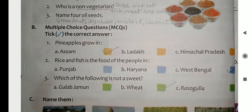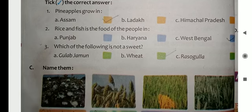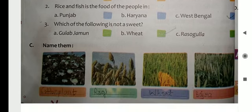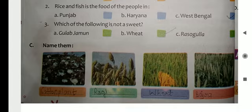Question three: Which of the following is not a sweet? Options: Gulab Jamun, wheat, or Rasgulla. Gulab Jamun and Rasgulla are sweets, so the answer is wheat. Question four: Name them — first is cotton plant, second ragi, third wheat, and fourth is bajra.